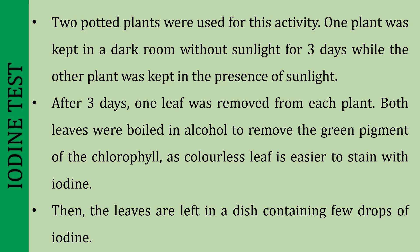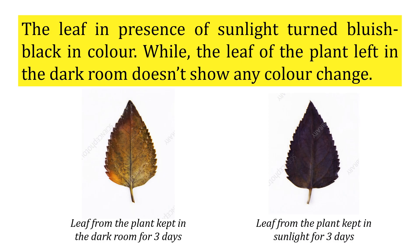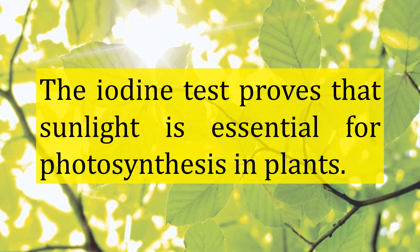Then the leaves are left in a dish containing a few drops of iodine. The leaf from the plant kept in sunlight turned bluish-black in color, while the leaf of the plant left in the dark room does not show any color change. So the iodine test proves that sunlight is essential for photosynthesis in plants.